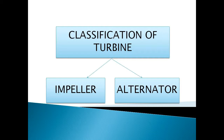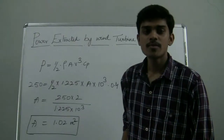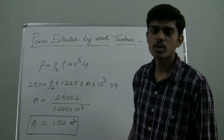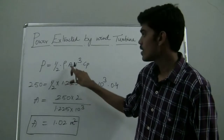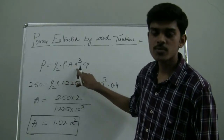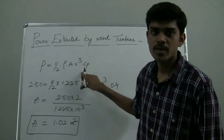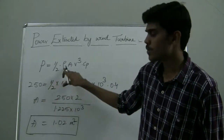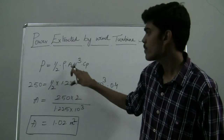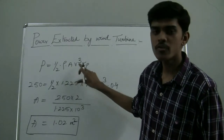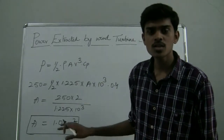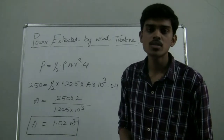Now we will have a look at the calculations based on which the impeller is designed. Let us calculate the swept area from the following mechanical parameters. From the relation Power = 0.5 × ρAV³Cp, where ρ is density of air, A is swept area, V is wind speed, and Cp is an efficiency parameter. We are designing a 250-watt wind turbine. Putting density as 1.225, wind speed as 10 m/s, and efficiency of 0.4, we get the swept area as 1.02 m². Based on this data, we have chosen the dimensions of our blades.